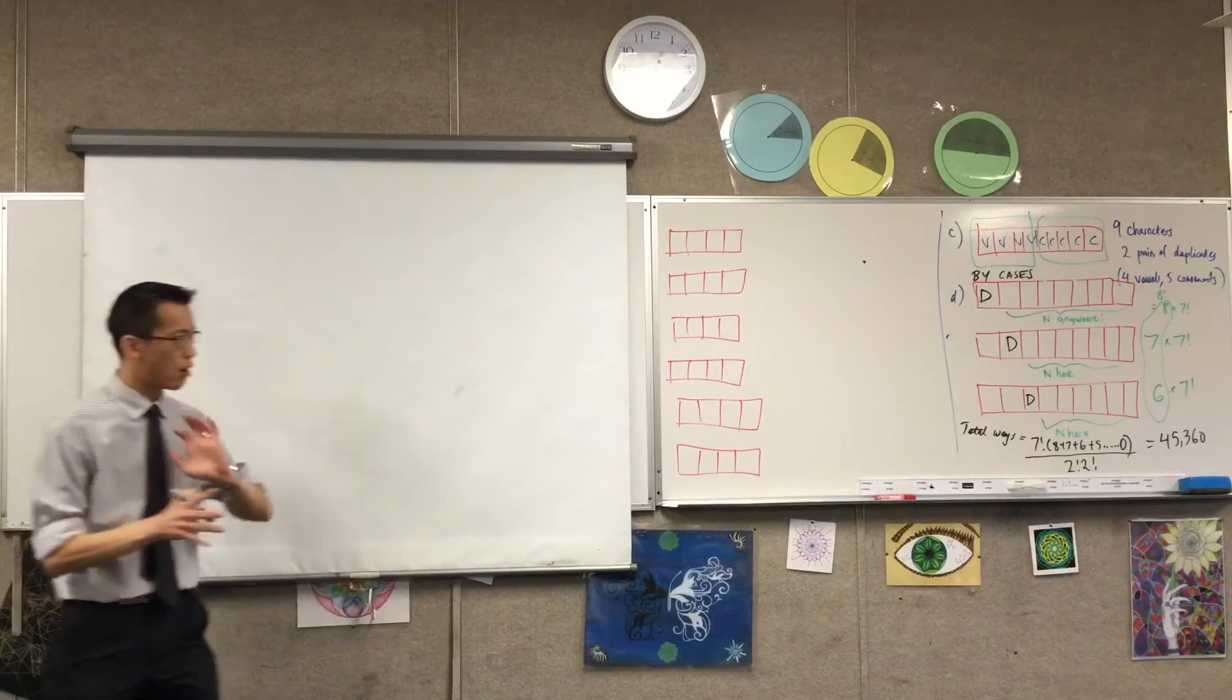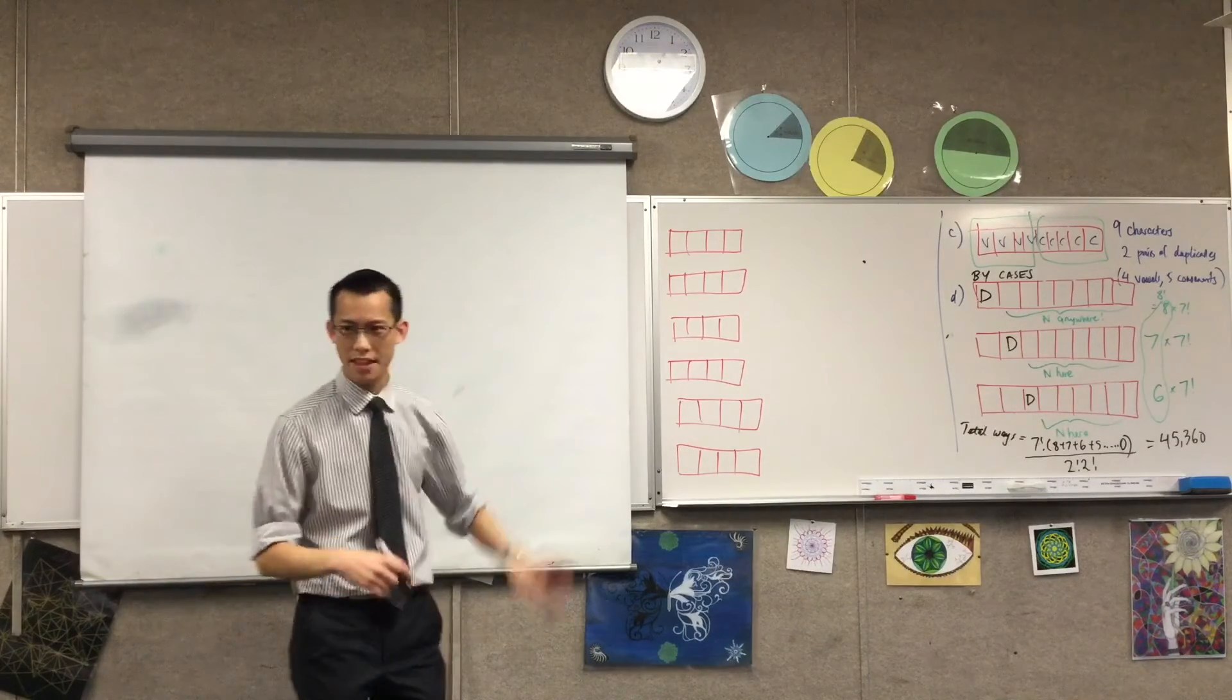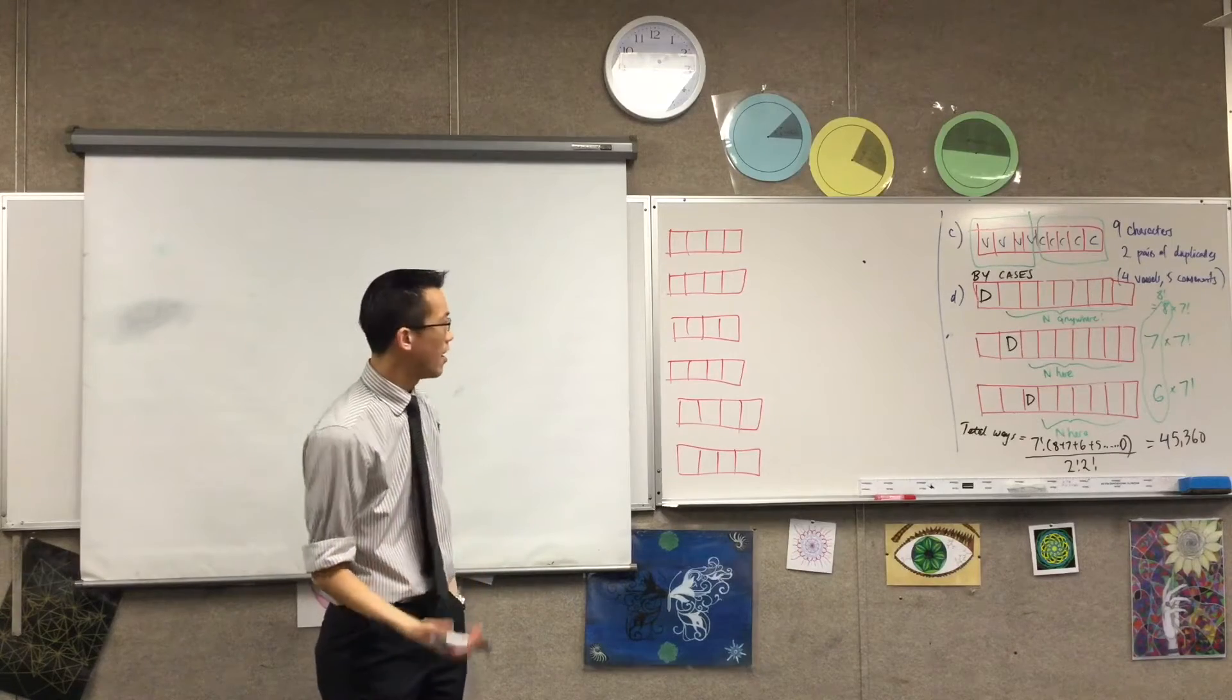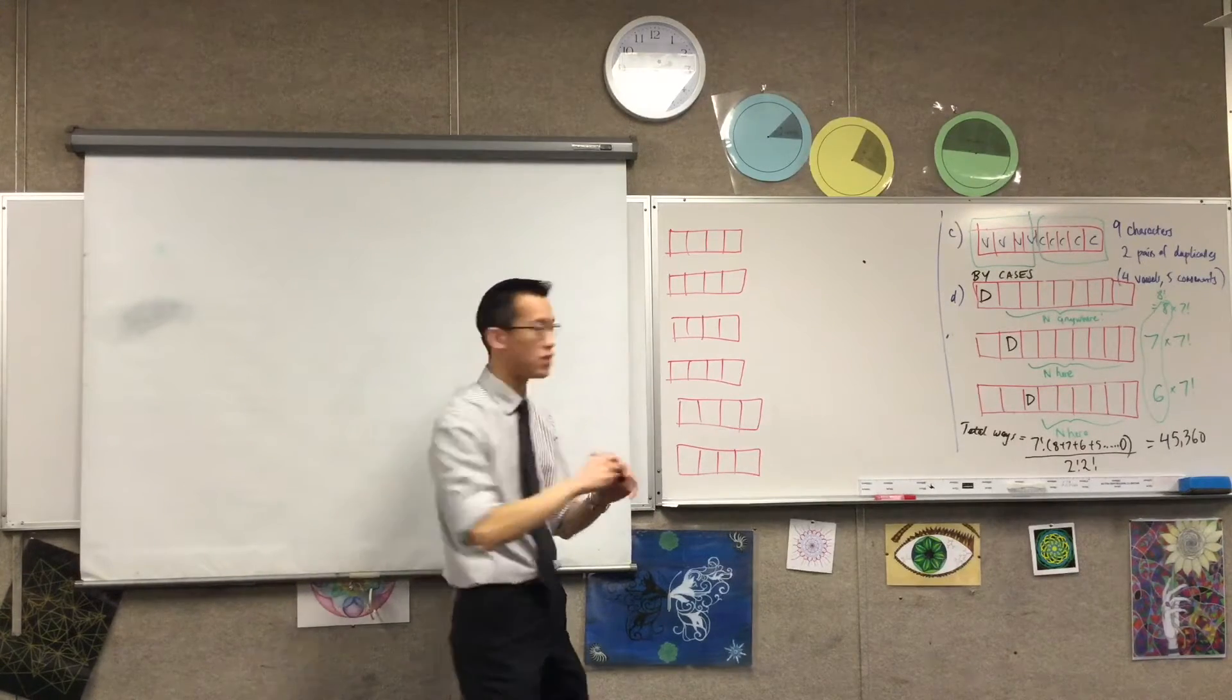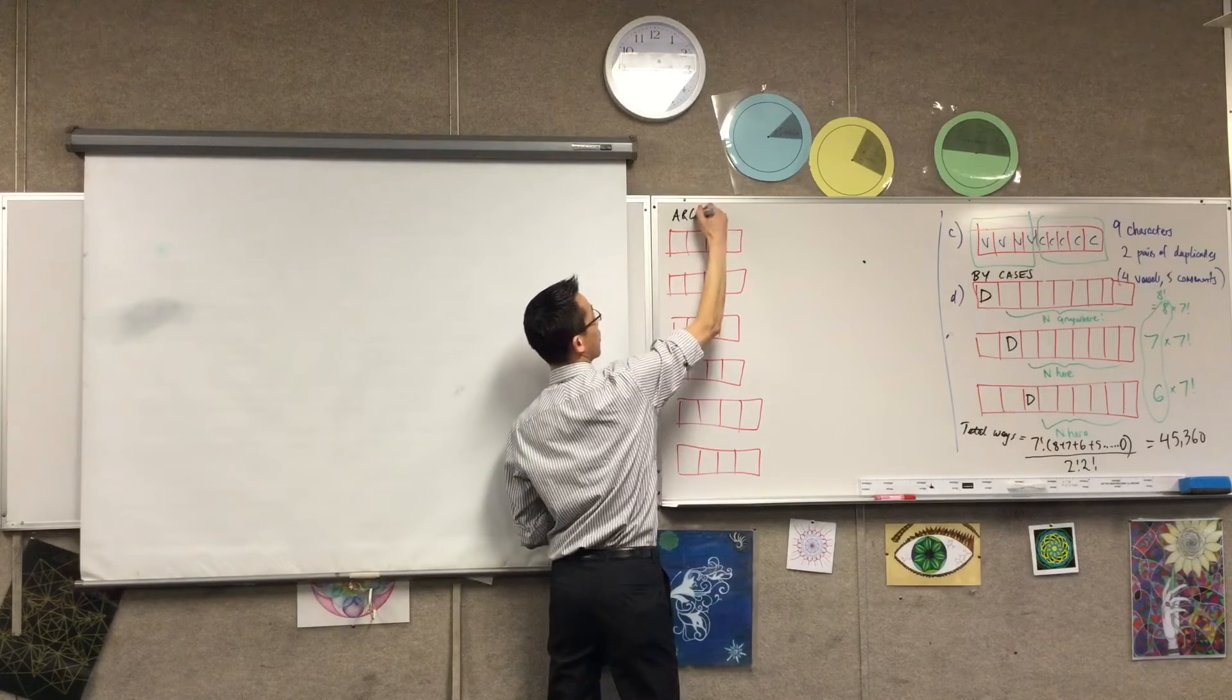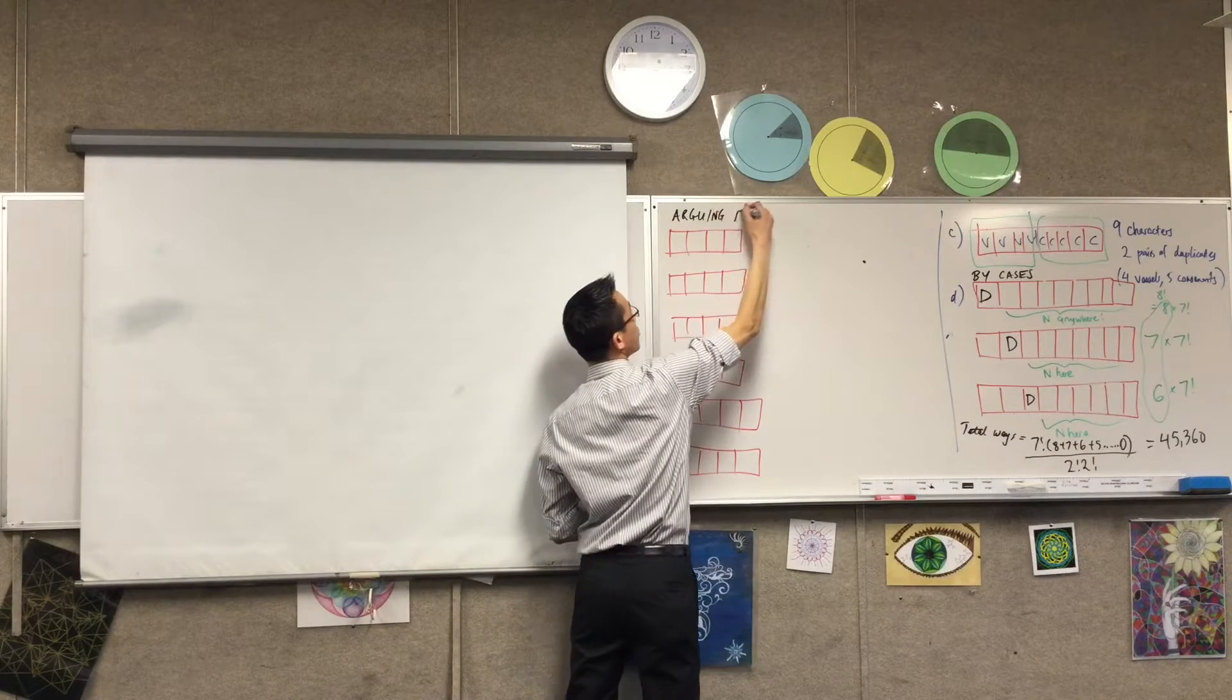When you see things in general throughout mathematics and they're halved, you should start thinking, is there something symmetrical about this situation? Okay, so approach number two is arguing from symmetry.